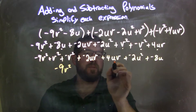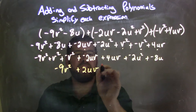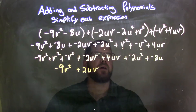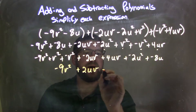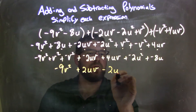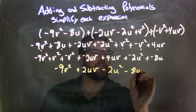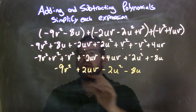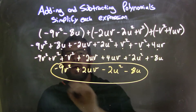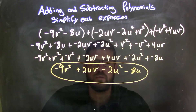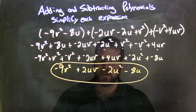Negative 2uv plus positive 4uv gives us a positive 2uv — those are my like terms. Then we have just a negative 2u squared, so I'm going to make that a minus 2u squared, and then minus 8u. And there we have it — our final answer is negative 9v squared, plus 2uv, minus 2u squared, minus 8u.